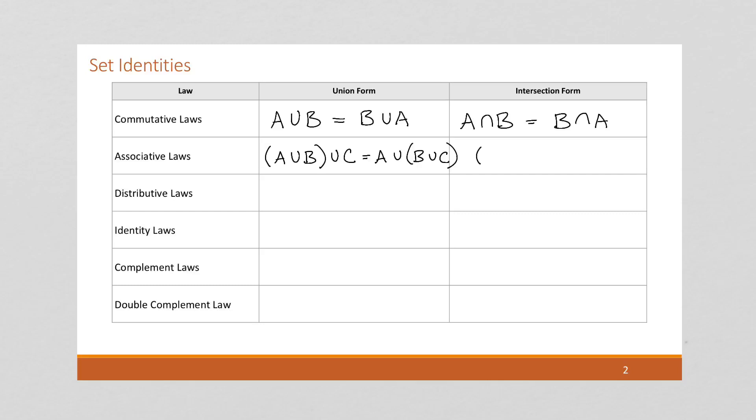And similarly with intersection form, A intersect B intersect C is equal to A intersect B intersect C.